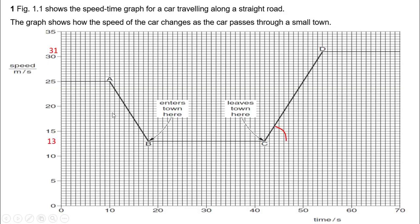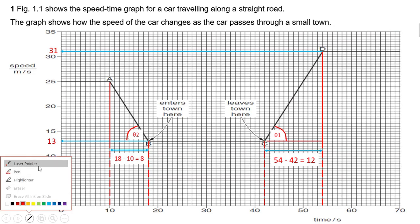Here also, we get the tan value. So tan theta 2 equals opposite divided by adjacent. Length of our opposite is 12 meters per second and our adjacent is 8 seconds.